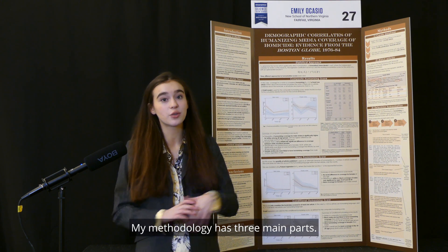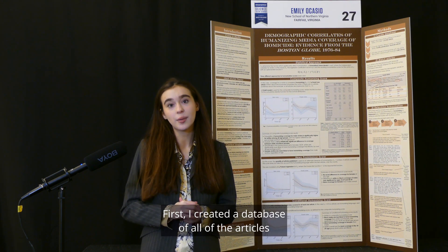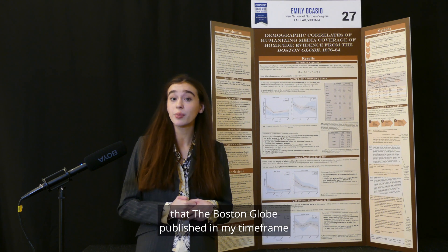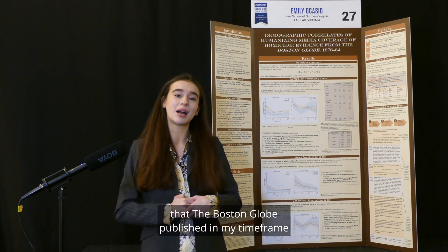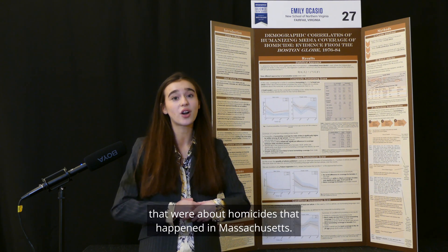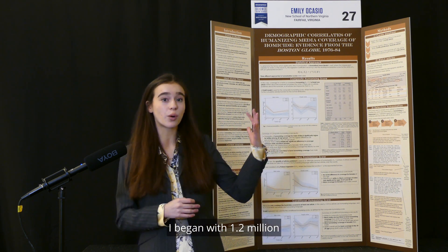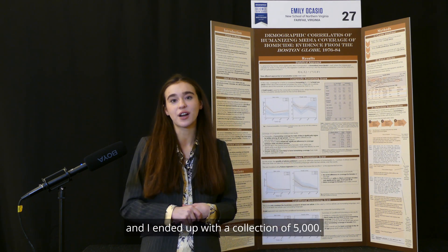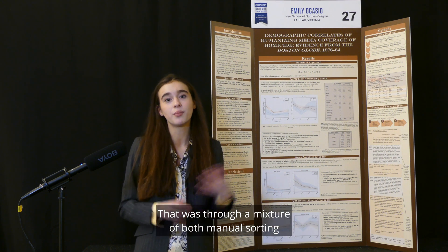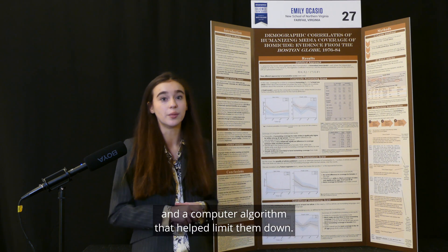My methodology has three main parts. First, I created a database of all of the articles that the Boston Globe published in my time frame that were about homicides that happened in Massachusetts. I began with 1.2 million and ended up with a collection of 5,000, through a mixture of both manual sorting and a computer algorithm that helped limit them down.